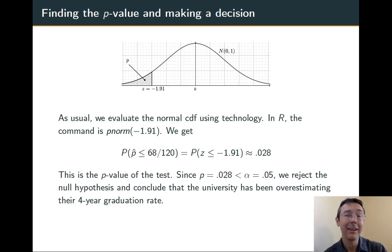So obviously that's less than the significance level alpha that we set. We reject the null hypothesis. It is reasonable to conclude that the university has been overestimating their four-year graduation rate.